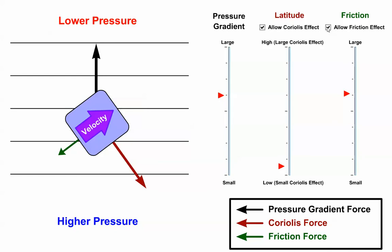This holds true even if we activate friction. With friction added to the mix, our parcel is no longer in geostrophic balance and crosses local isobars in toward lower pressure.